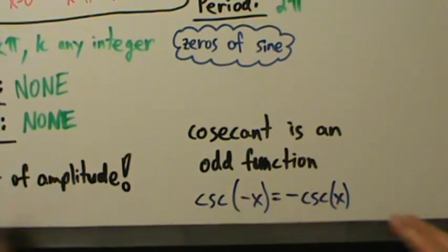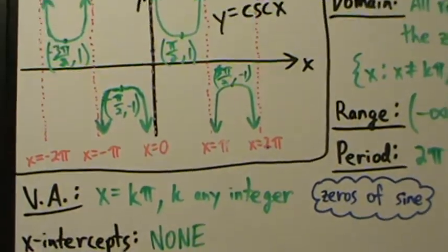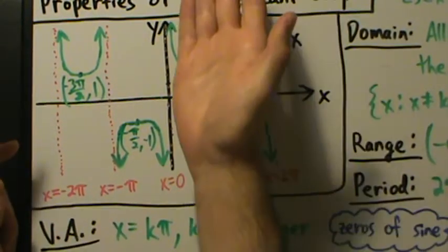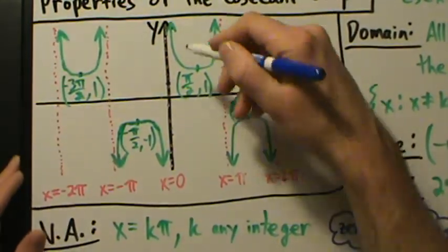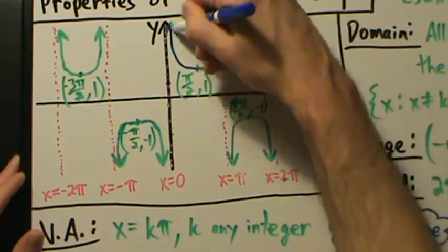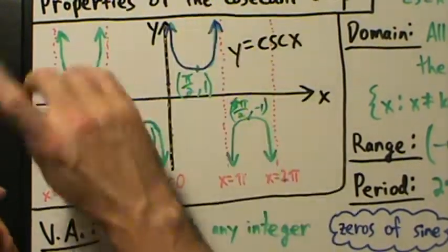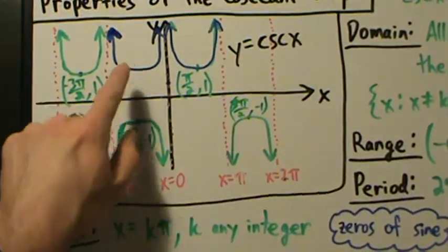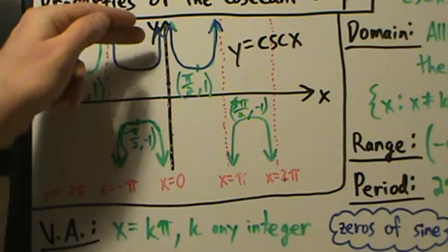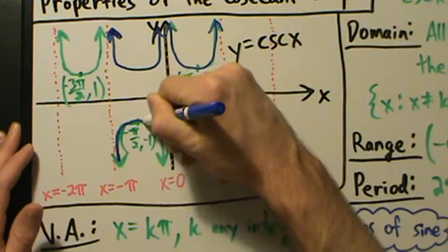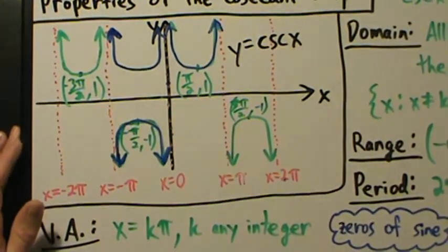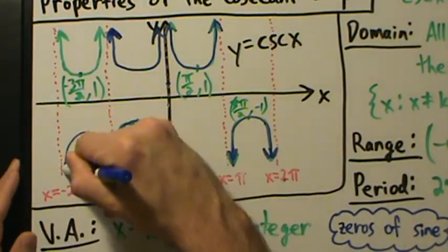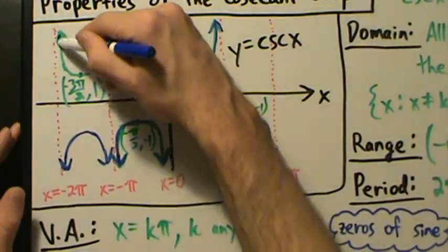What does it mean geometrically? An odd function has a graph that is symmetric over the origin. That means if you reflect over the y-axis and then over the x-axis, you get back the same graph. For example, take this piece here, reflect it over the y-axis, and you get a piece like this. Then reflect that over the x-axis and you get exactly this piece over here. The same applies to the other pieces — reflect over the y-axis, then over the x-axis, and you get another piece of the graph.